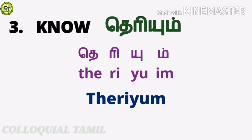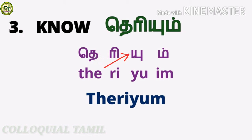The third word is 'theriyum', the Tamil word for 'know.' This is 'தெ', a short sound letter. This is 'ரி', a short sound letter. This is 'யு', also a short sound letter. This is 'ம்', a consonant. Together, the word is 'theriyum.' When using consonants in a word, the inherent vowel of the consonant becomes silent — like the vowel of 'ம்' becomes silent here.